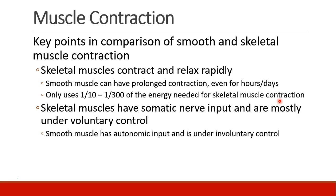Also, skeletal muscles have somatic nerve input, which means that they're mostly under voluntary control, whereas smooth muscles have autonomic input and are almost exclusively under involuntary control.